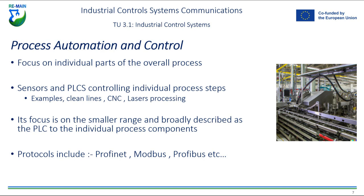With process automation and control, there's a focus on the individual parts of the overall process — sensors and PLCs controlling individual process steps. For example, a clean line, a CNC, or laser processing machine. These are examples of individual process automation. You're trying to automate a part coming into, say, a clean line to the part coming out, with sensors and actuators in place on that particular process, controlled at the local level via a PLC.